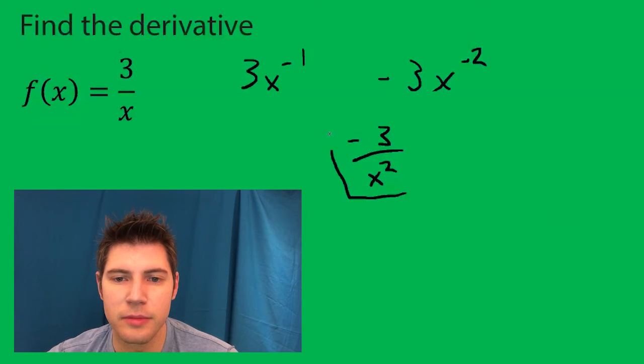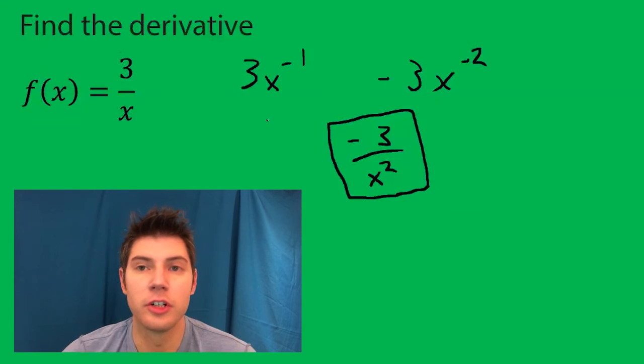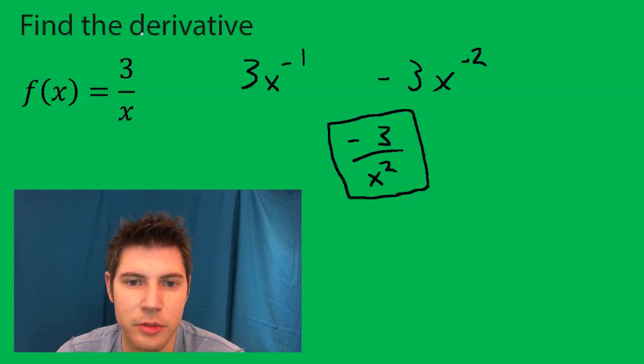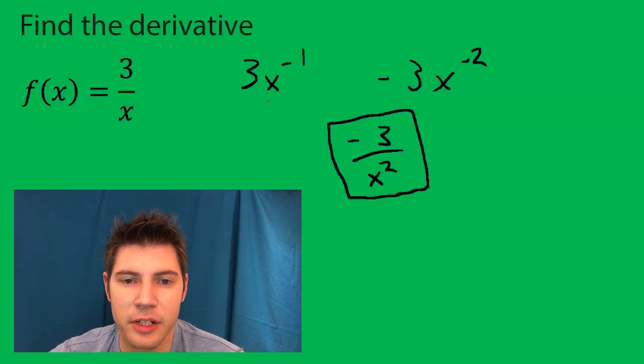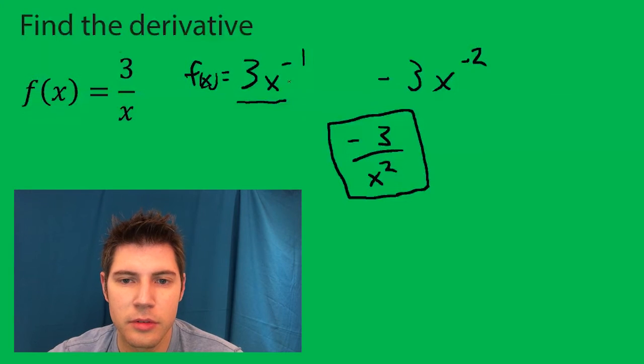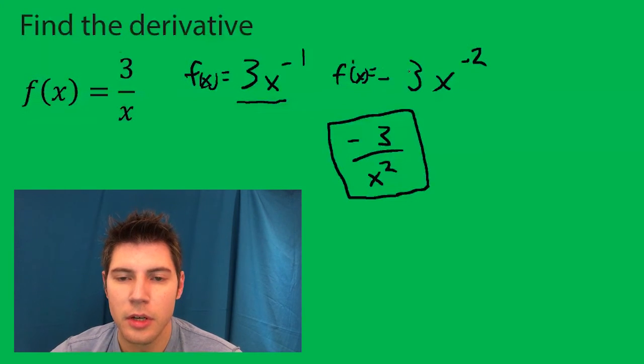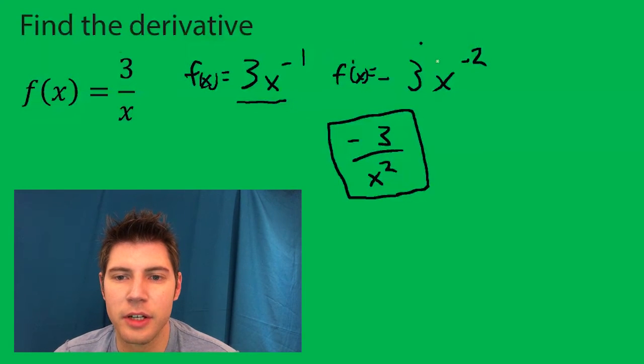And that's the answer. So you could have done quotient rule, but we chose not to. We ended up rewriting it this way. And then when we took the derivative, we just did the normal derivative rule, where we brought it down and then lowered it by 1. And then we got our final answer.